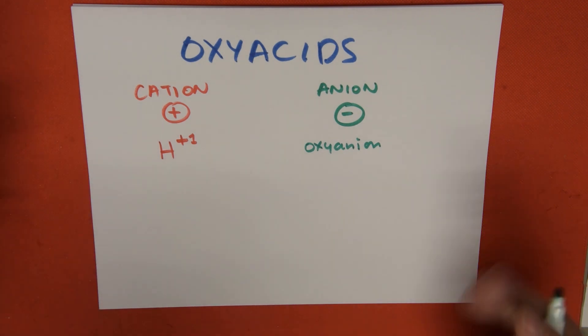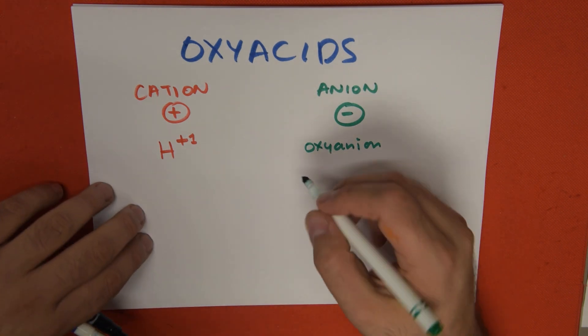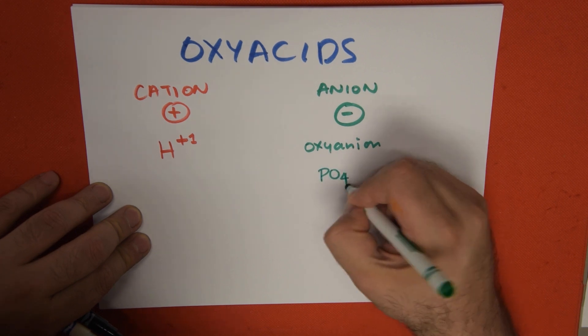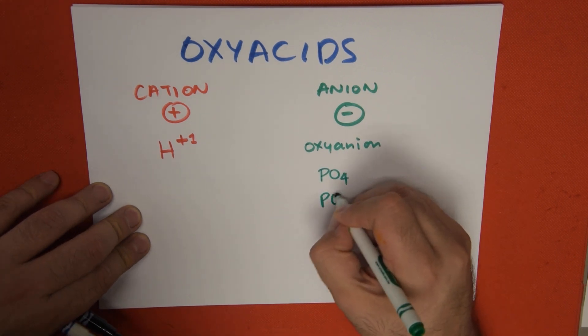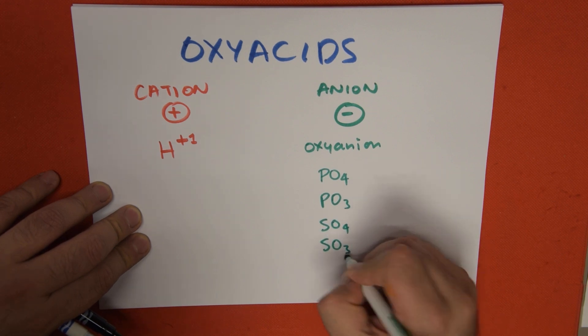Let's talk about some of the most common oxyanions that you'll find when mixing oxyacids together. In this case, we have phosphate and phosphite, we have sulfate and sulfite, we have nitrate and nitrite.